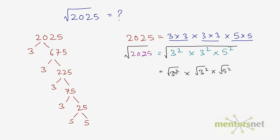The square root and the square cancel out, so what remains is 3 times 3 times 5. So 3 times 3 is 9, and 9 times 5 is 45. Therefore the square root of 2025 is 45.